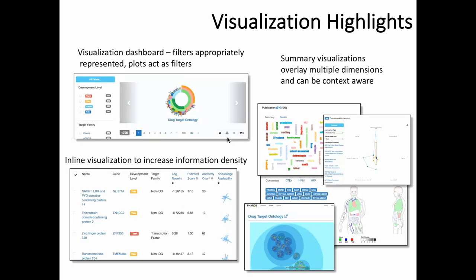Highlighting a few visualization features: on the top left is the visualization dashboard shown when viewing the list of targets. You can click through different visualizations that change according to the data type being visualized. For example, the Drug Target Ontology — a hierarchical data structure — gets visualized as a sunburst diagram. Importantly, these visualizations act as filters: clicking on a specific element of the sunburst uses the corresponding DTO term as a filter on the target set, and filters can be removed, added, or joined with others.